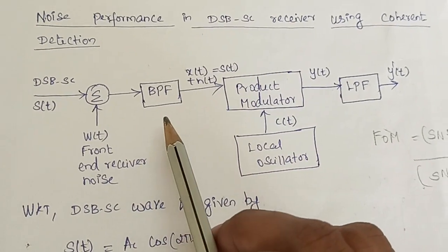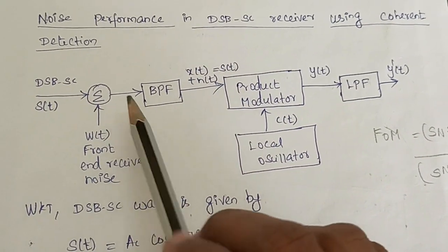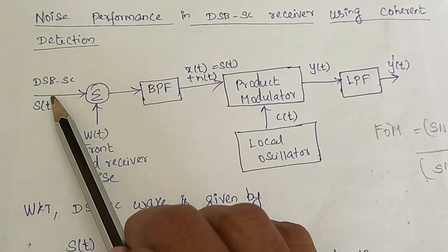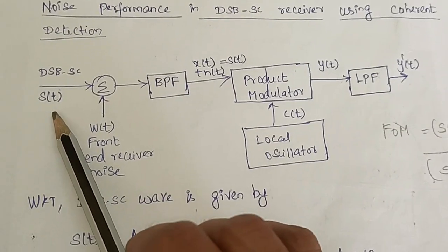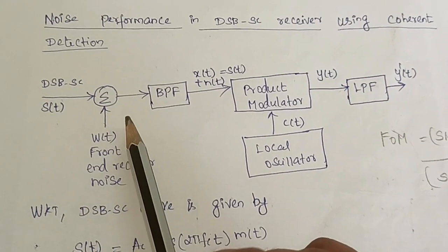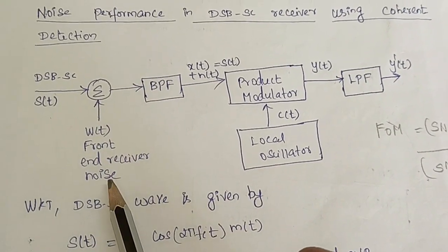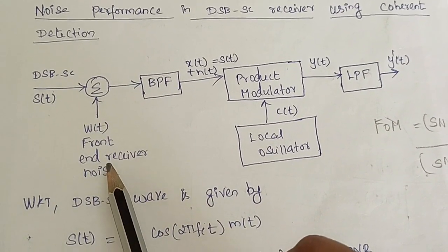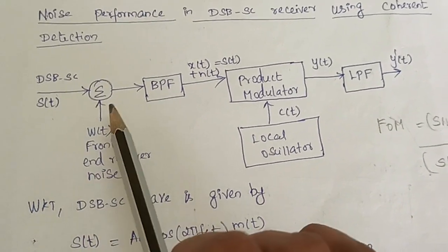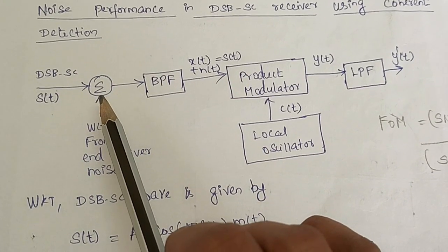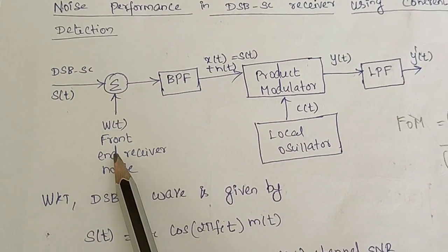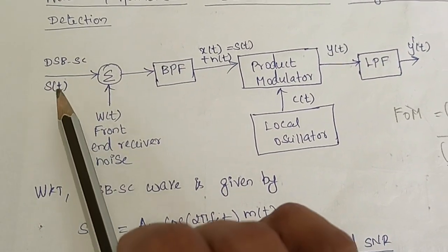Let us look into the noise model of this coherent detector. The input to this receiver is going to be a DSBSC wave — double sideband suppressed carrier — represented as S of T. As the signal travels through the transmission medium, it gets affected by noise, which is additive in nature. This front end receiver noise gets added to the input.